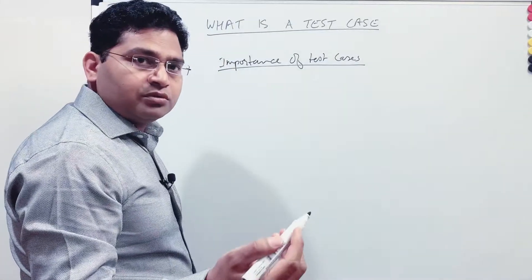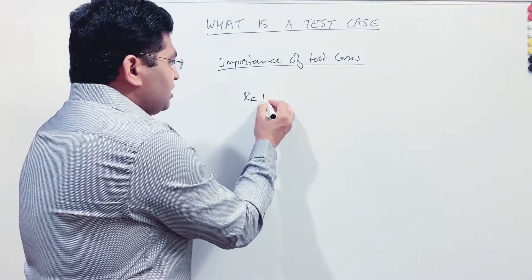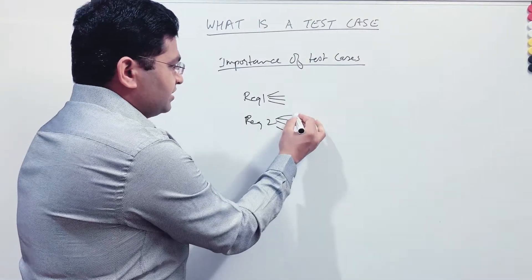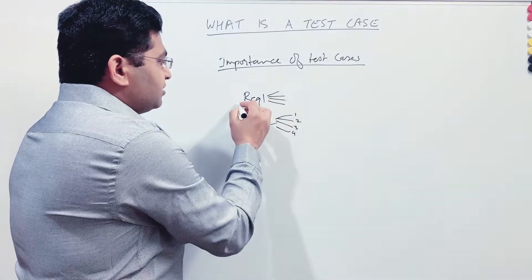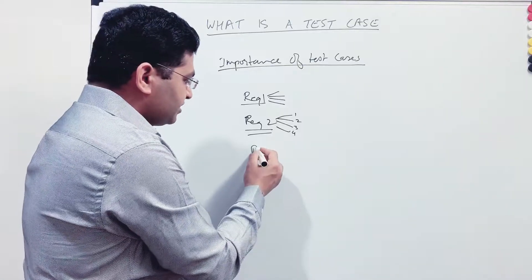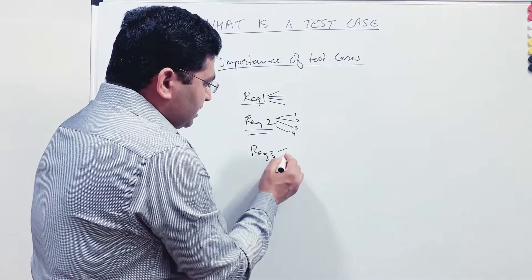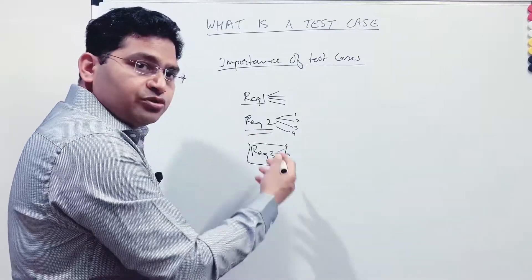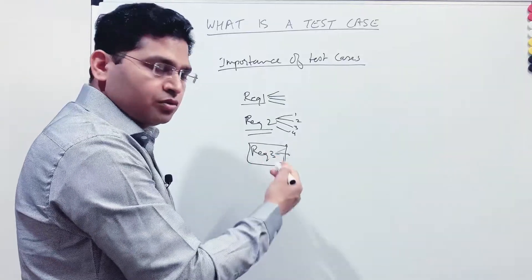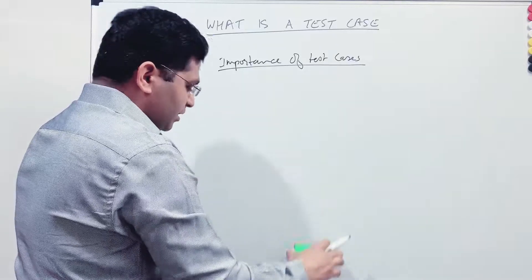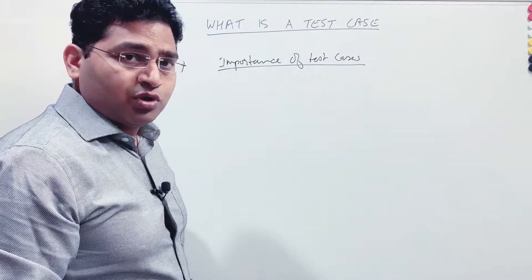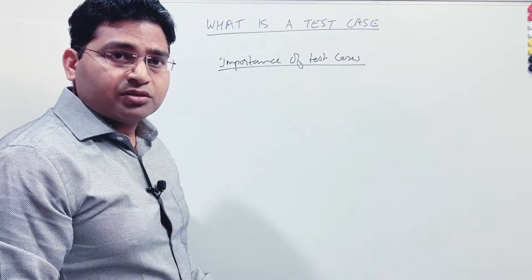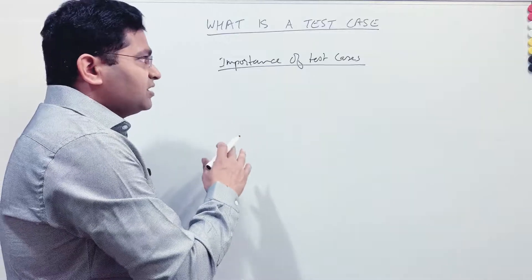The third important aspect is coverage. If we have requirement one and requirement two, and we have written test cases and defined the traceability of the test cases with the requirements, we know that all the requirements are being covered with the testing. If there is a requirement for which we don't have any test cases linked, we know that we need to write test cases for that requirement to ensure it has been tested and quality is good. So traceability, requirement coverage, and reusability are the key factors why test case writing is very important.